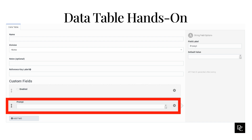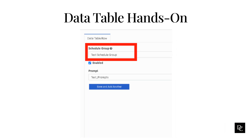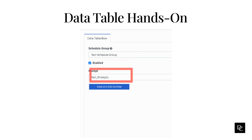Click Save. It will take you back to the data table's view. Click on the data table you just created and click the plus button. In the reference key, we are using the schedule group names. Input the schedule group name you want to reference — that will be our input. For the boolean enabled, check the box. This will be checked in the call flow, and if enabled, it will play the prompt that we input in the prompt field. In the prompt field, put the name of the prompt you want to play. Make sure the prompt and schedule group names are exact. Click Save. Now, set this aside as we will circle back to this.